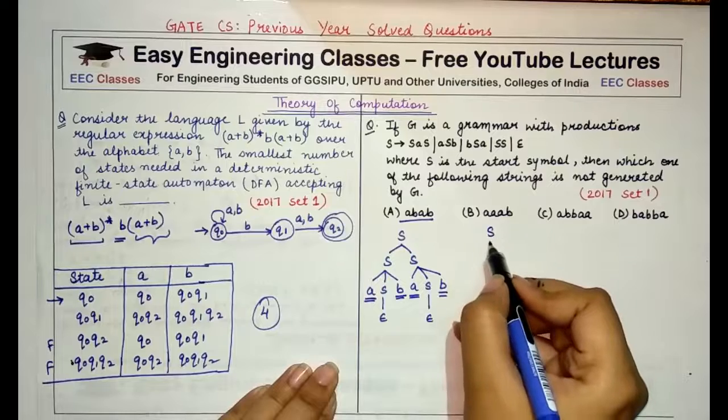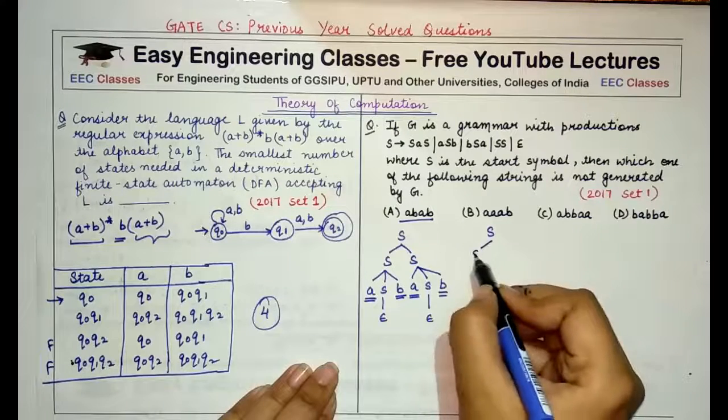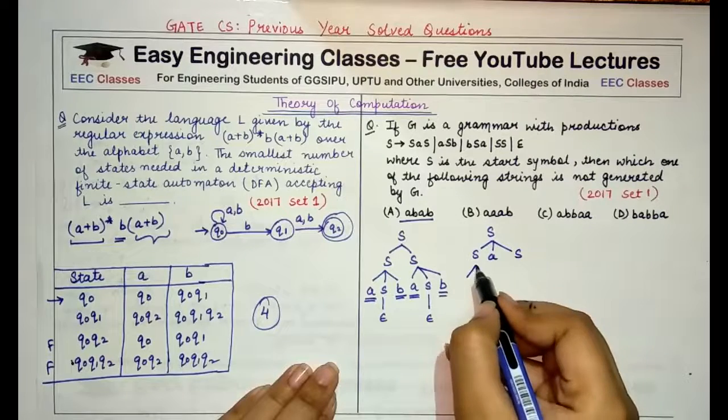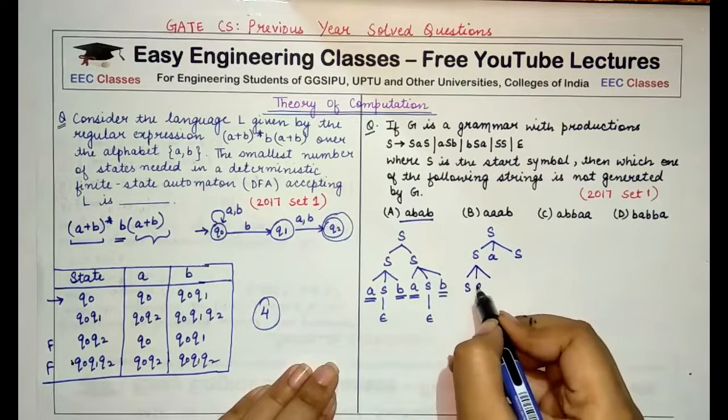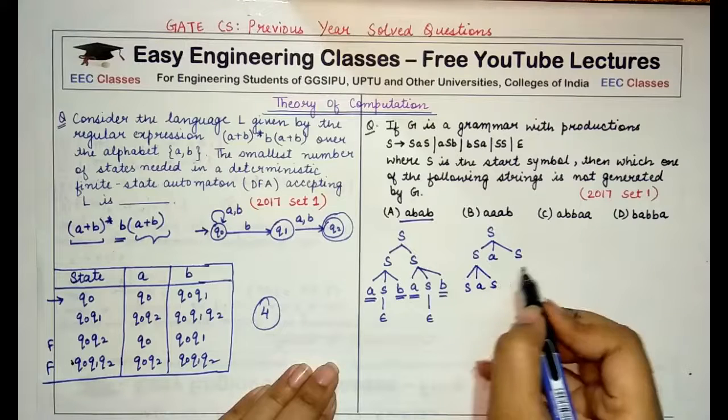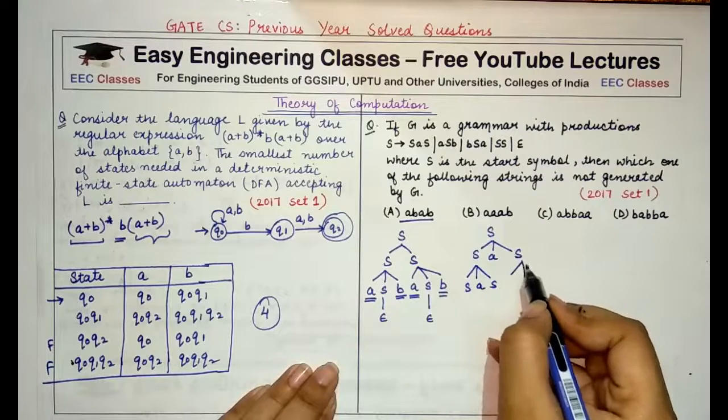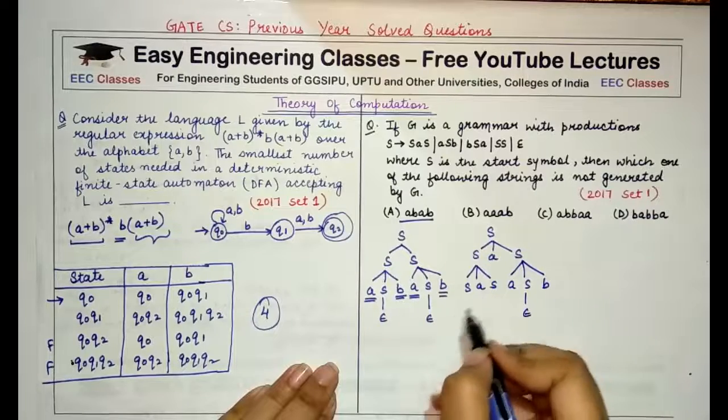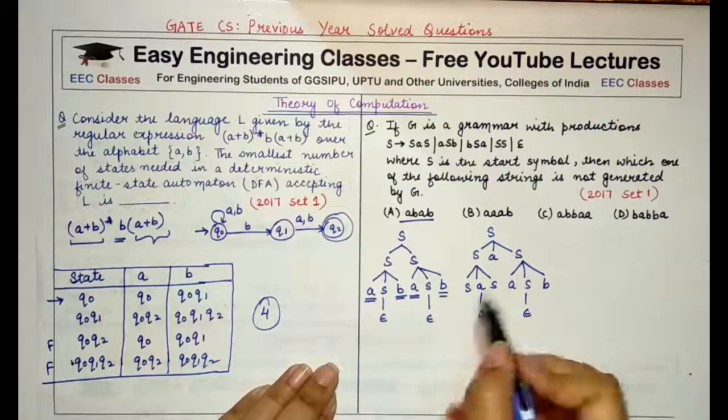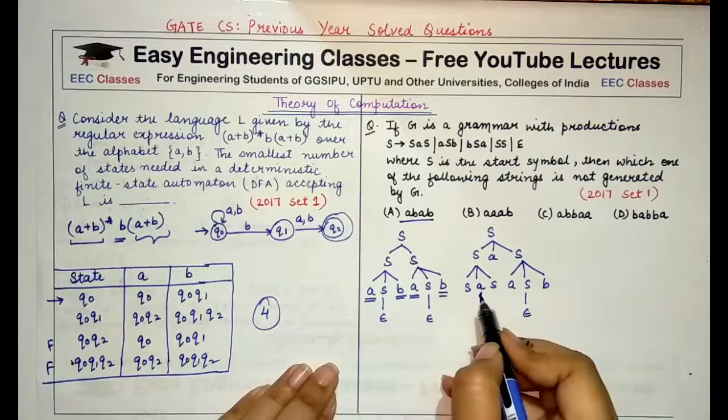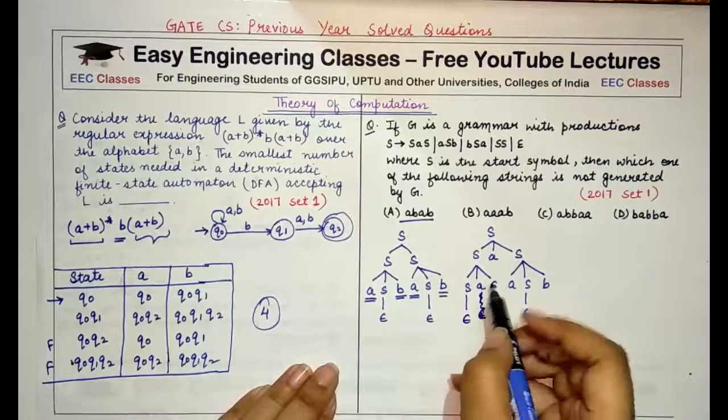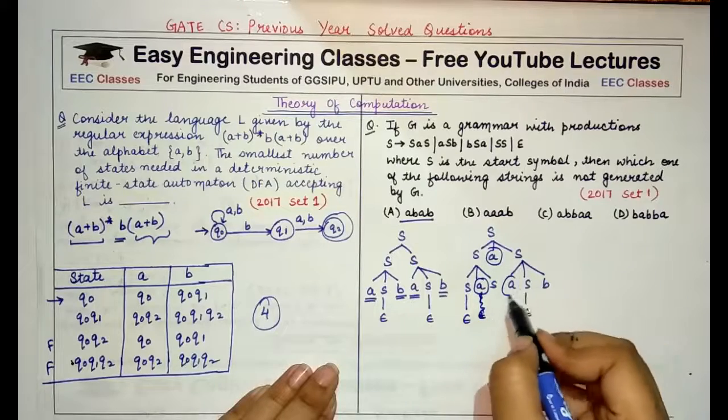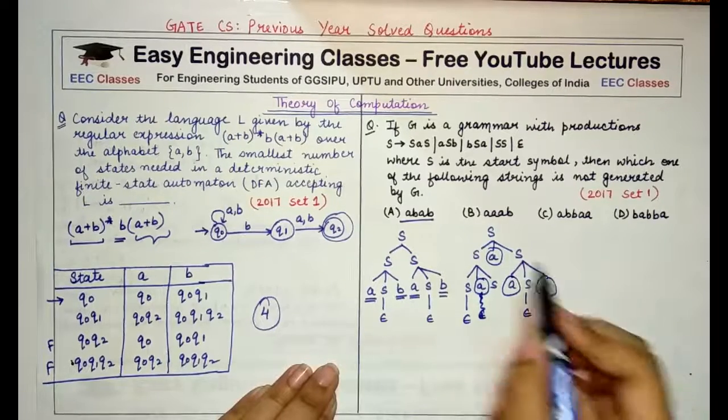Now coming to the second part, from S I go to SaS, then from S I expand to SaS again, and here aSb. Here I replace with epsilon, here I replace with epsilon, so I'm getting aaa and b. So this string is also possible.